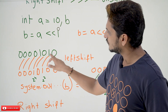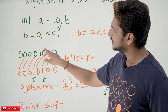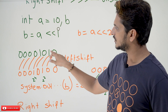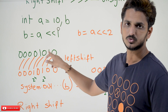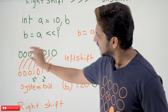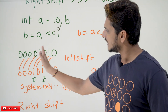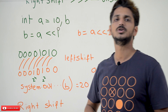The binary of 10: 1, 0, 1, 0. 2^0, 2^1, 2^2, 2^3. 2^3 means 8, 2^1 means 2. 8 plus 2 equals 10. This is the binary value of 10; the remaining bits are all 0s.